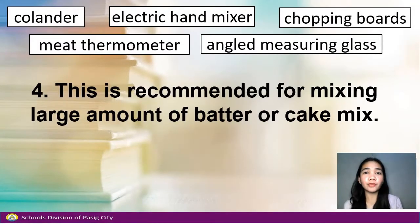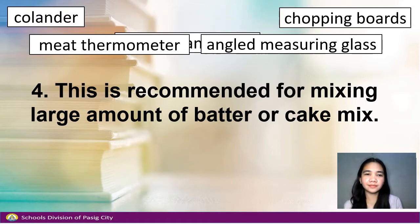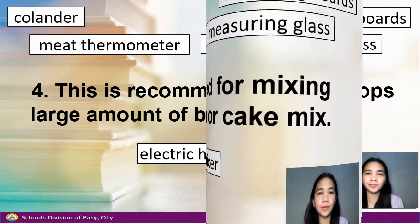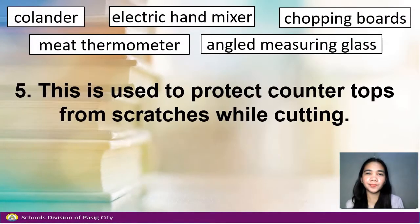Number 4. This is recommended for mixing large amounts of butter or cake mix. Answer: Electric hand mixer. Number 5.